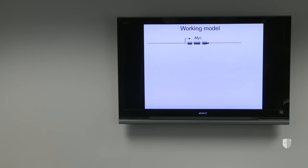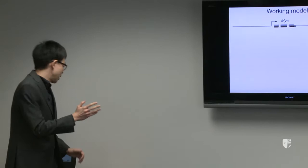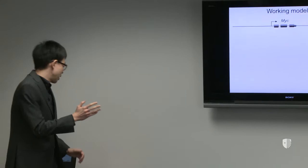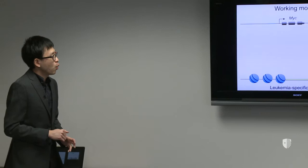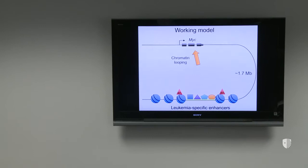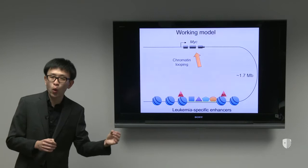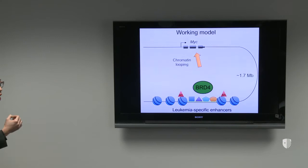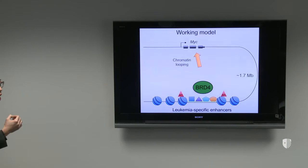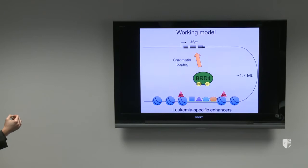Here is a quick summary of our working model: using JQ1 to target BRD4 and suppress MYC transcription. We find a leukemia-specific enhancer located 1.7 megabases downstream of MYC, with a bunch of transcription factors binding there. This enhancer loops to the MYC promoter to control its expression, and this requires BRD4 binding. When we use a small molecule to target the bromodomain of BRD4, we displace BRD4 from the chromatin, and we shut off MYC transcription.